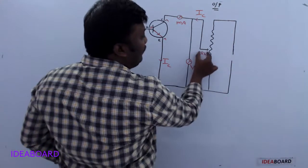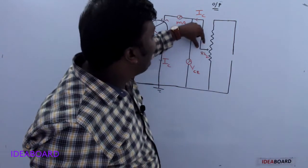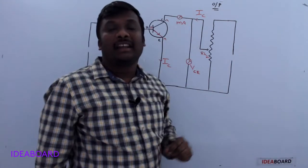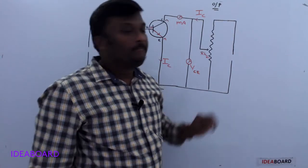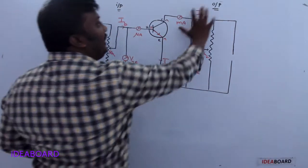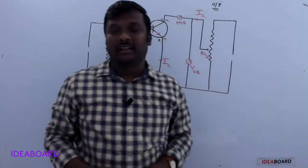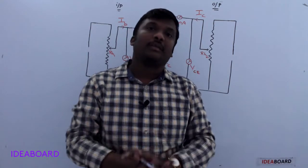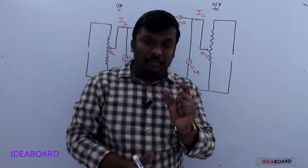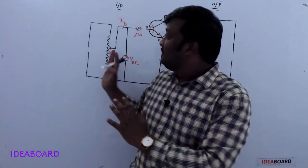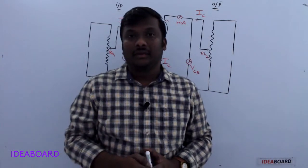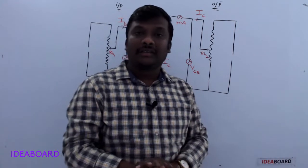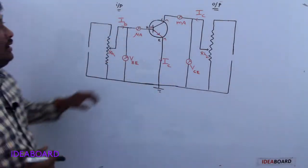Another rheostat is connected for the output side. When the slider changes, VCE changes and the corresponding IC value also changes. Please concentrate on these transistor characteristics because most numerical problems in the transistor chapter come from transistor characteristics only. If you neglect it, you won't be able to solve any numericals.